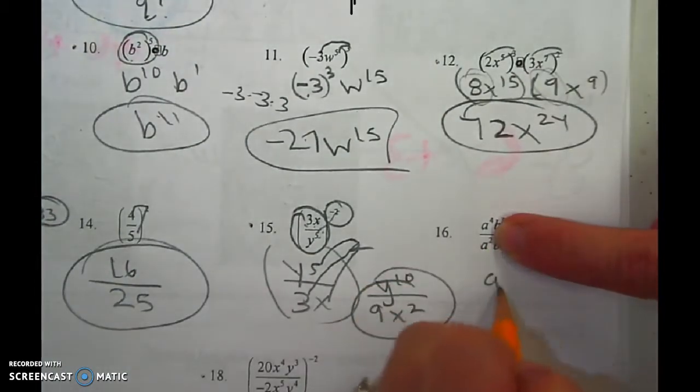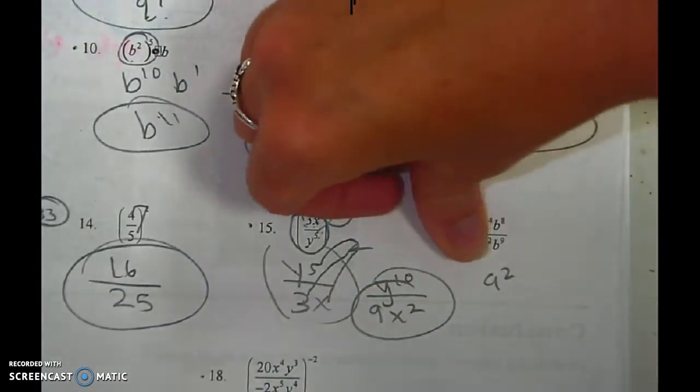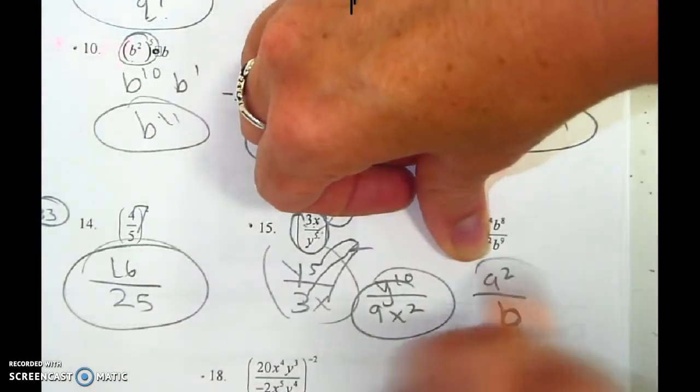Let's look here. More a's on top or bottom? Top by 2. More b's on top or bottom? Bottom by 1. I'm too lazy to put the 1, so I'm done.